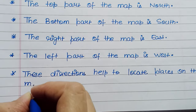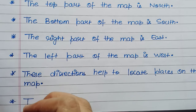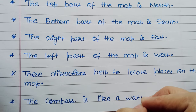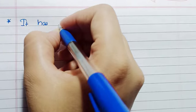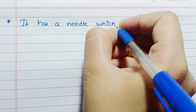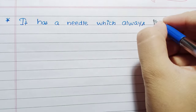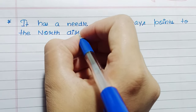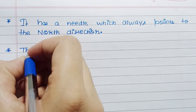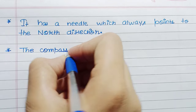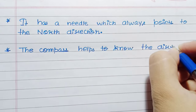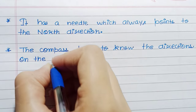These directions help to locate places on the map. The compass is like a watch. It has a needle which always points to the north direction. The compass helps to know the directions on the map.